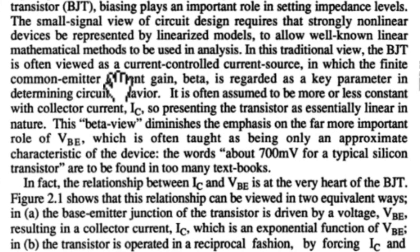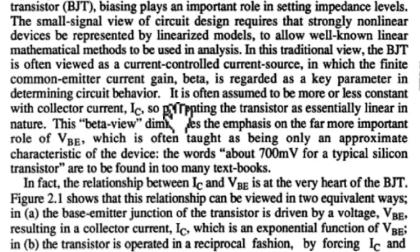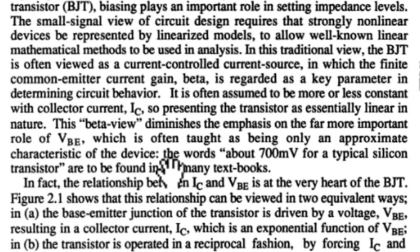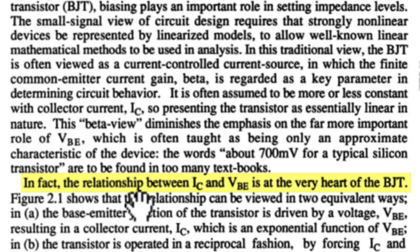The BJT is often viewed as a current-controlled current source in which the finite common emitter current gain beta is regarded as a key parameter in determining circuit behavior. It is often assumed to be more or less constant with collector current IC, so presenting the transistor as essentially linear in nature. This beta view diminishes the emphasis on the far more important role of VBE, which is often taught as being only an approximate characteristic of the device. The words 'about 700 millivolts for a typical silicon transistor' are to be found in too many textbooks. In fact, the relationship between IC and VBE is at the very heart of the BJT. That's from Barry Gilbert.